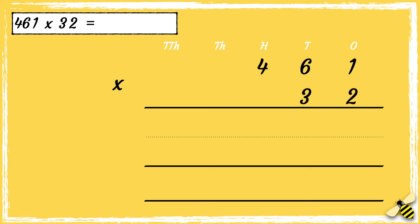First we'll multiply 2 by 1 — 2 times 1 is 2. Then we can multiply 2 by 6 tens — 2 times 6 is 12. We can drop the 1 below in the hundreds column. Now we need to multiply 2 by 4 hundreds — 2 times 4 is 8, and 1 more is 9.